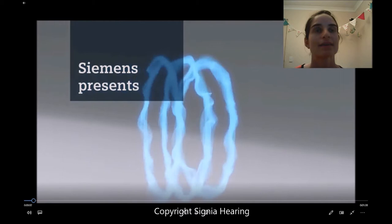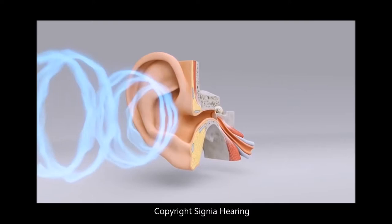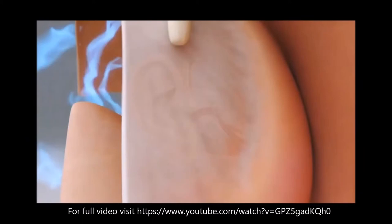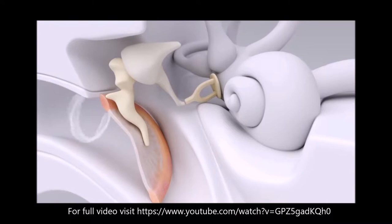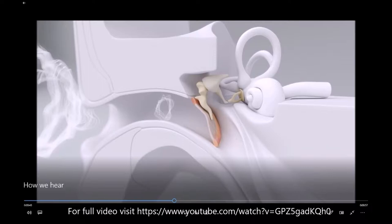Our world is full of infinite sounds, but how do we actually perceive them? Sounds are collected by the outer ear, which consists of the auricle and the external auditory canal. The sound is guided through the ear canal to the middle ear, arriving at the eardrum — a flexible circular membrane which starts to vibrate when sound waves strike it. The sound waves are passed on by the movement of the eardrum to the middle ear, where there are three tiny bones referred to as the hammer, the anvil, and the stirrup — collectively known as the ossicular chain.